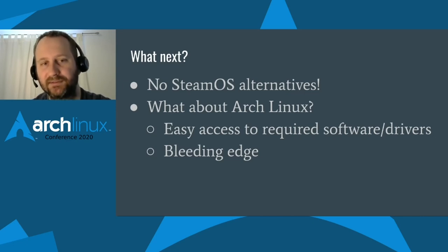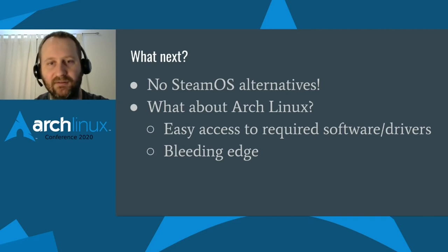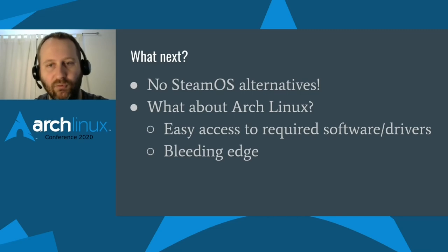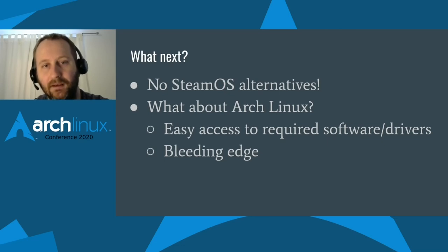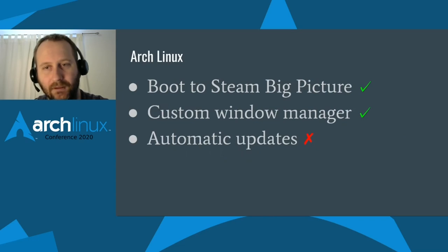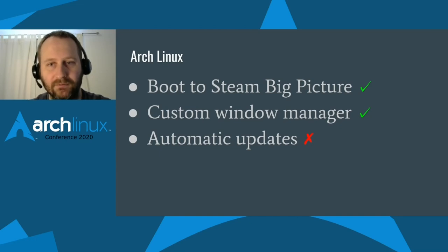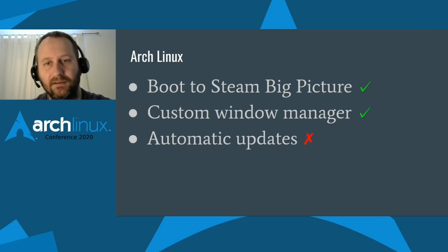A lot of emulators use a lot of bleeding-edge features in the GPU drivers, so having the latest drivers is important — also important for game compatibility in general. So I ended up wiping SteamOS off my living room gaming PC and installing Arch Linux, trying to recreate the experience I was having on SteamOS. The three key features needed for a good experience that SteamOS provided: first, being able to boot directly into Steam Big Picture — that's pretty easy to handle; I just set up the login manager to automatically boot up into Steam Big Picture.